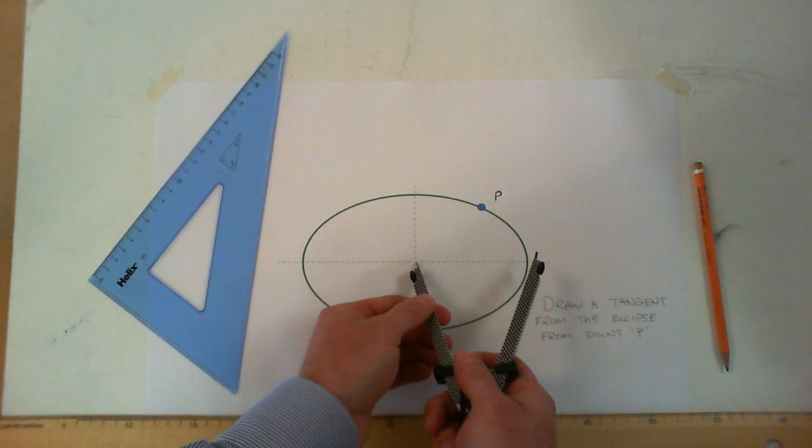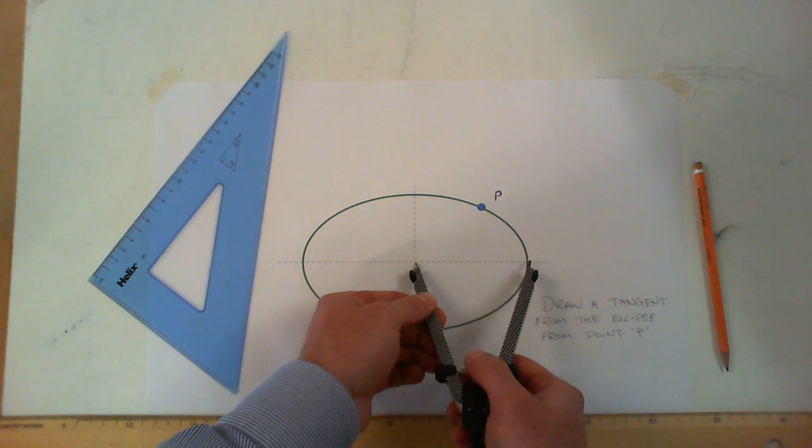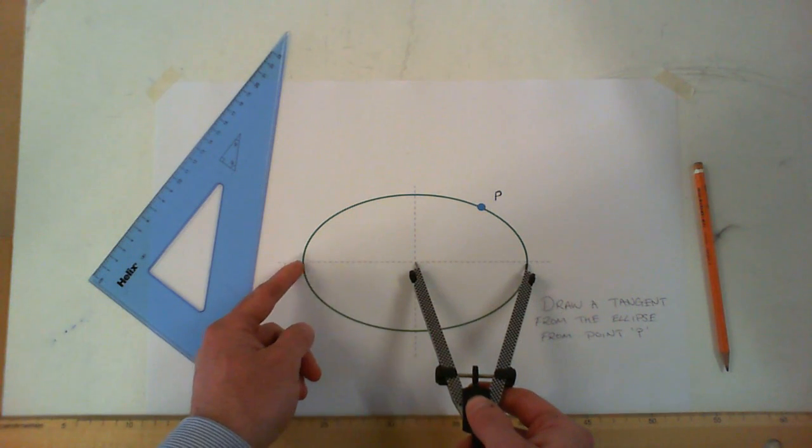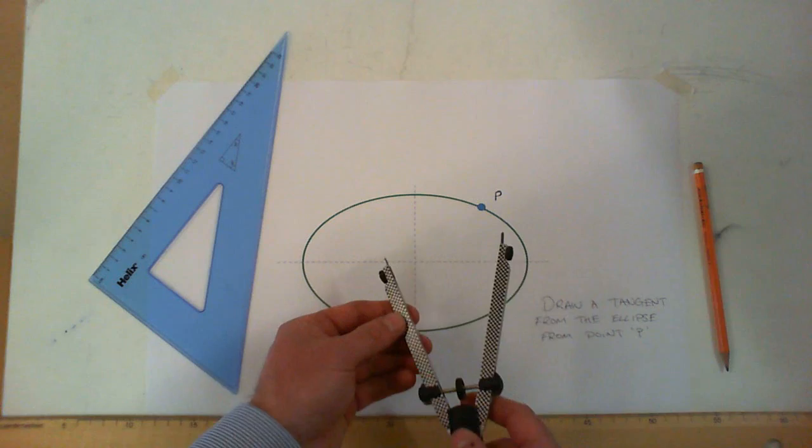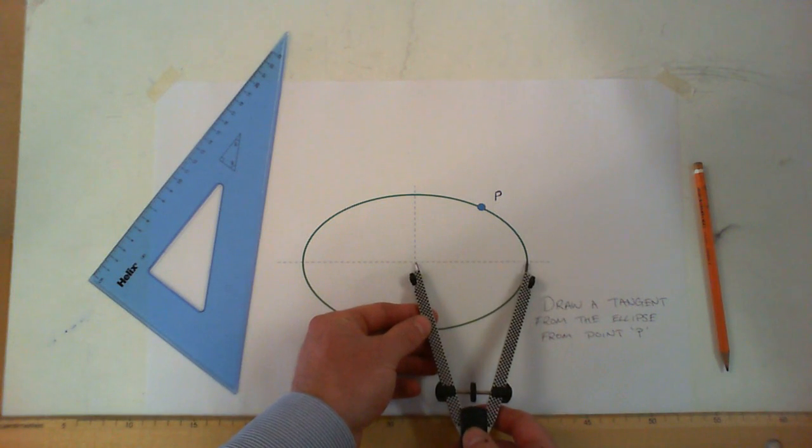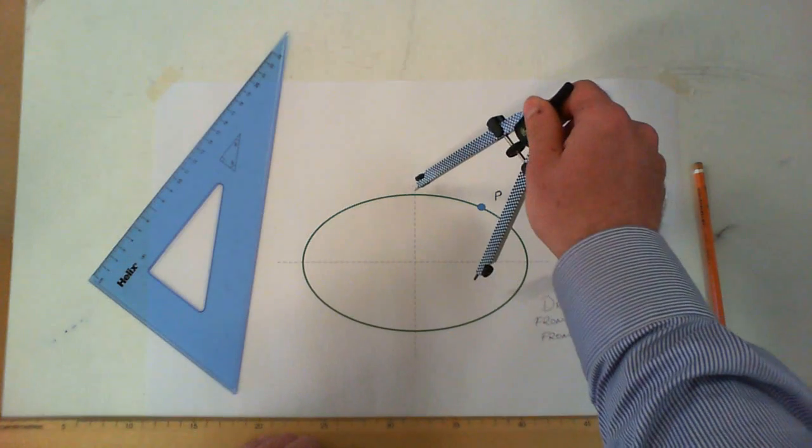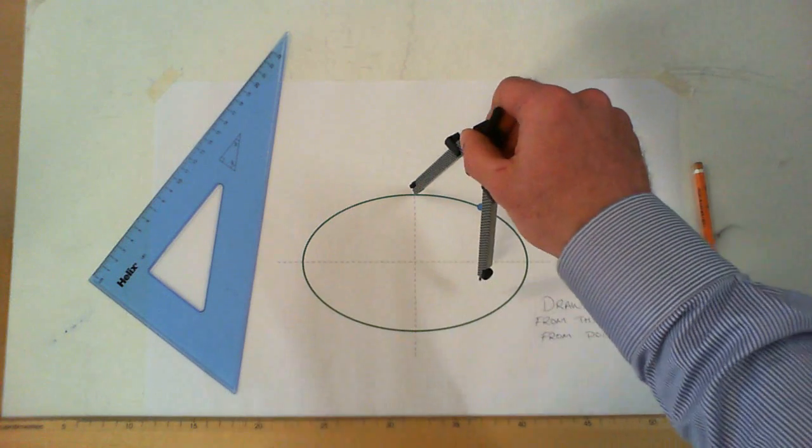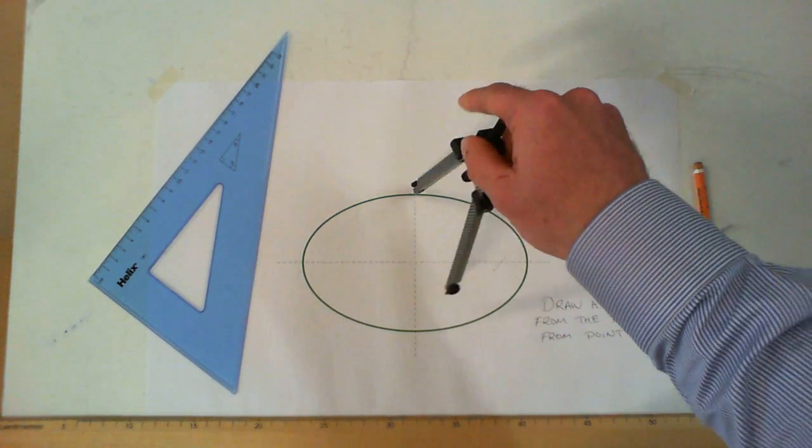This is basic revision for the ellipse to start us off. To find the focal points, what we do is get half our major axis—the major axis is the one that runs the longest length on the ellipse—and we take that distance of half our major and go to the top of our ellipse, the top of the minor axis.